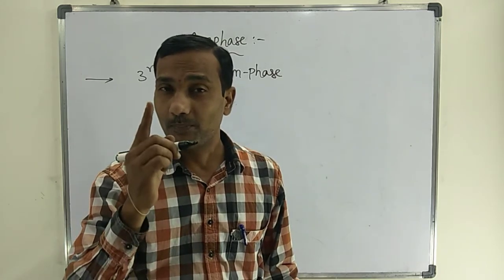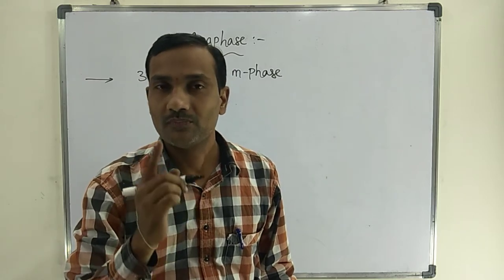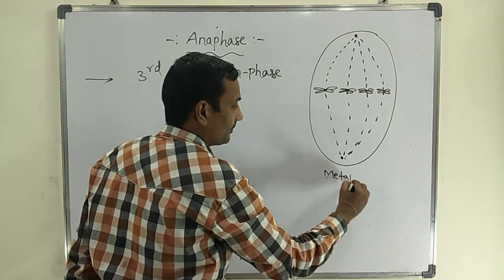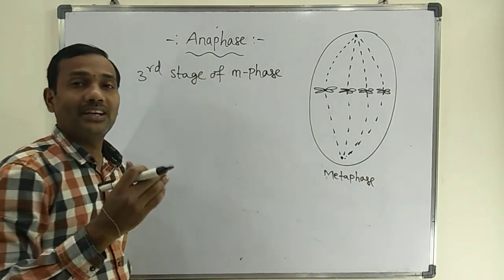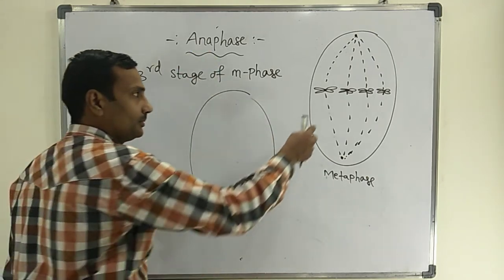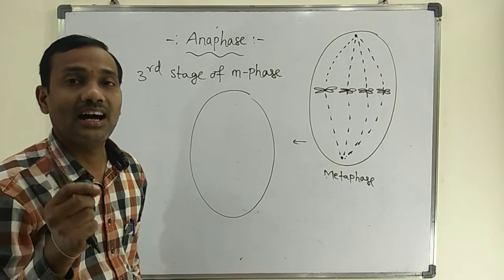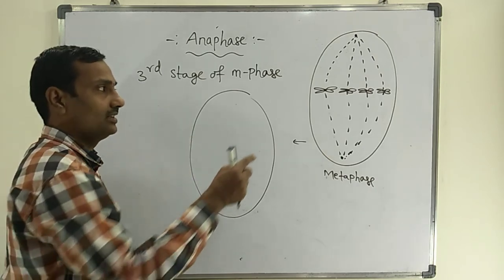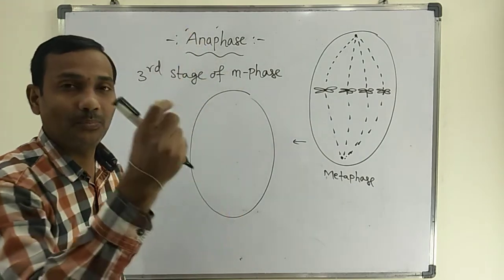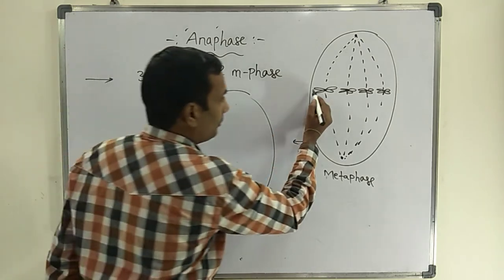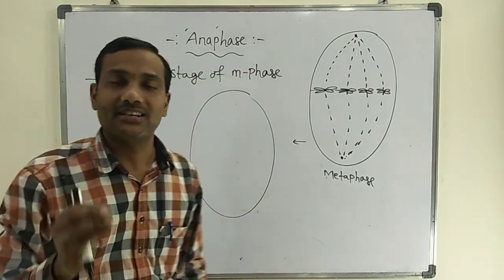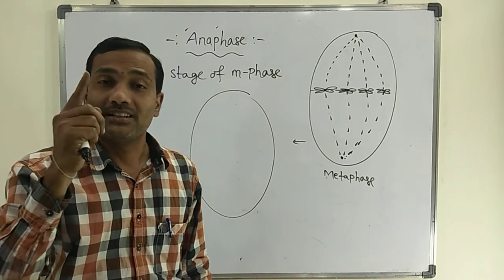The major event that occurs in anaphase is mainly the splitting of chromosomes. In metaphase, chromosomes are arranged at the center of the cell forming the equatorial plate, but during anaphase, splitting of chromosomes occurs. All chromosomes split at the exact location of the centromere.